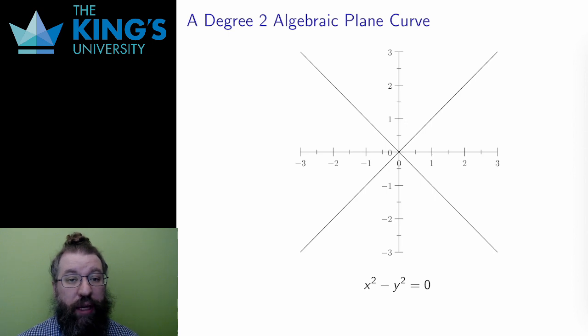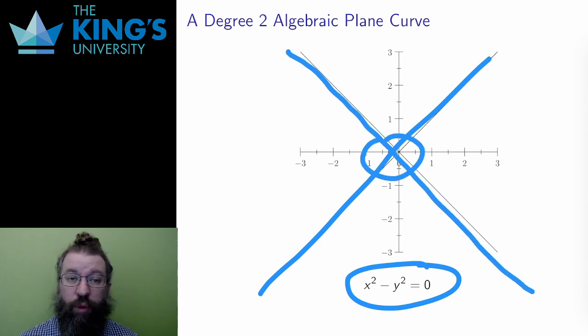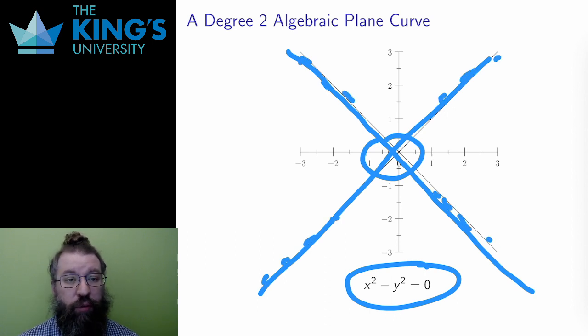So, consider the algebraic plane curve which is the locus of x squared minus y squared equals zero. The graph of this locus is an infinitely extended x shape, two straight diagonal lines which meet at the origin. Everywhere on the first line the slope is one. Everywhere on the second line the slope is negative one.